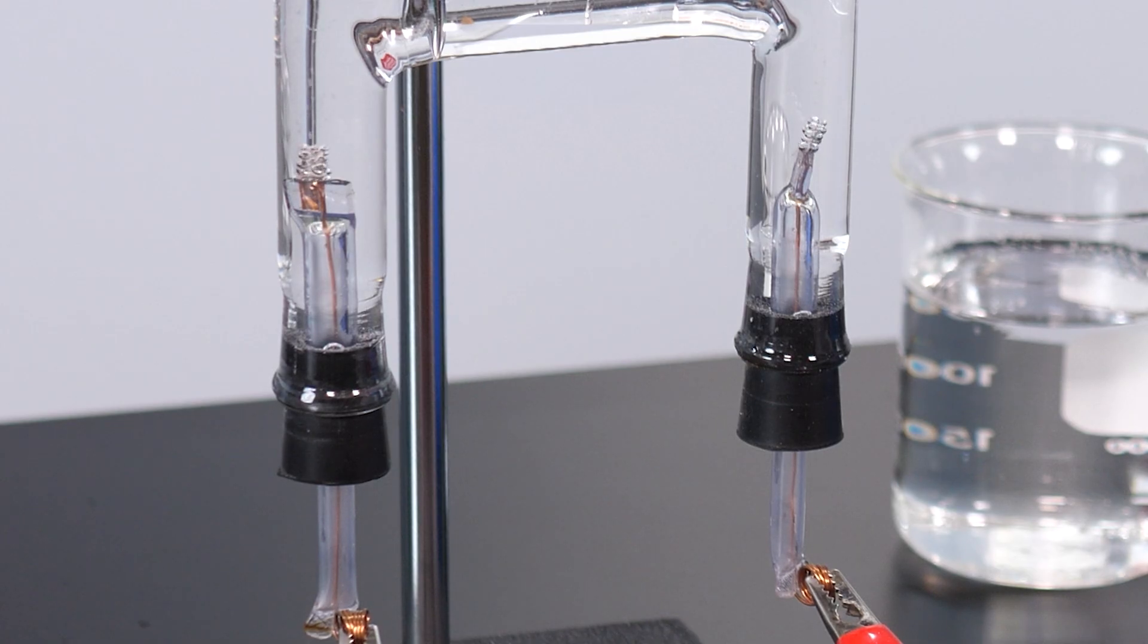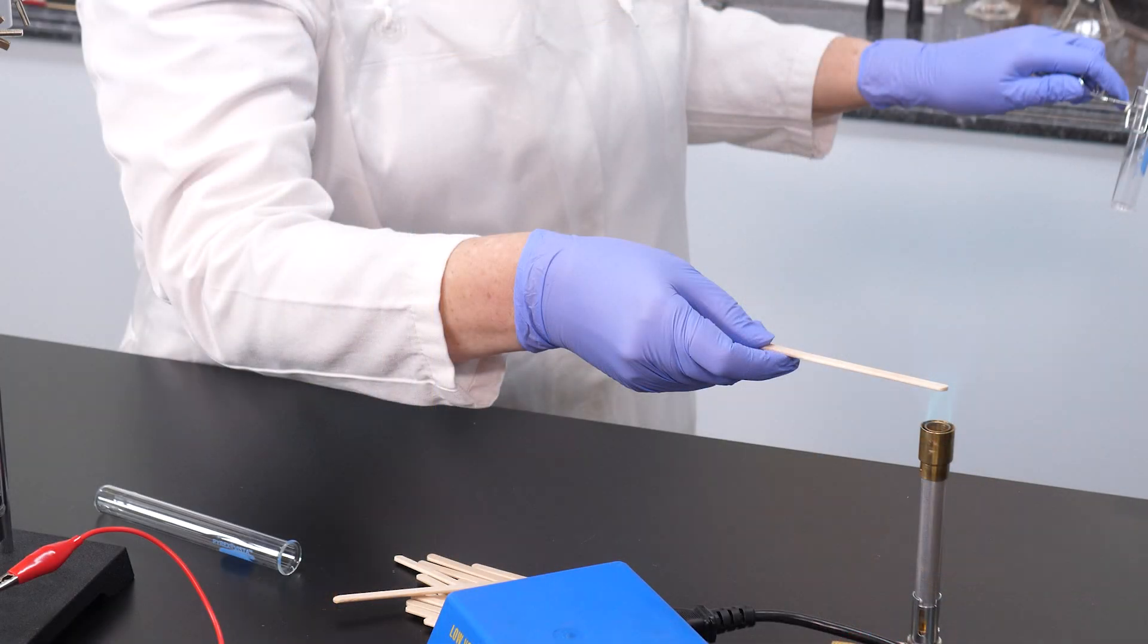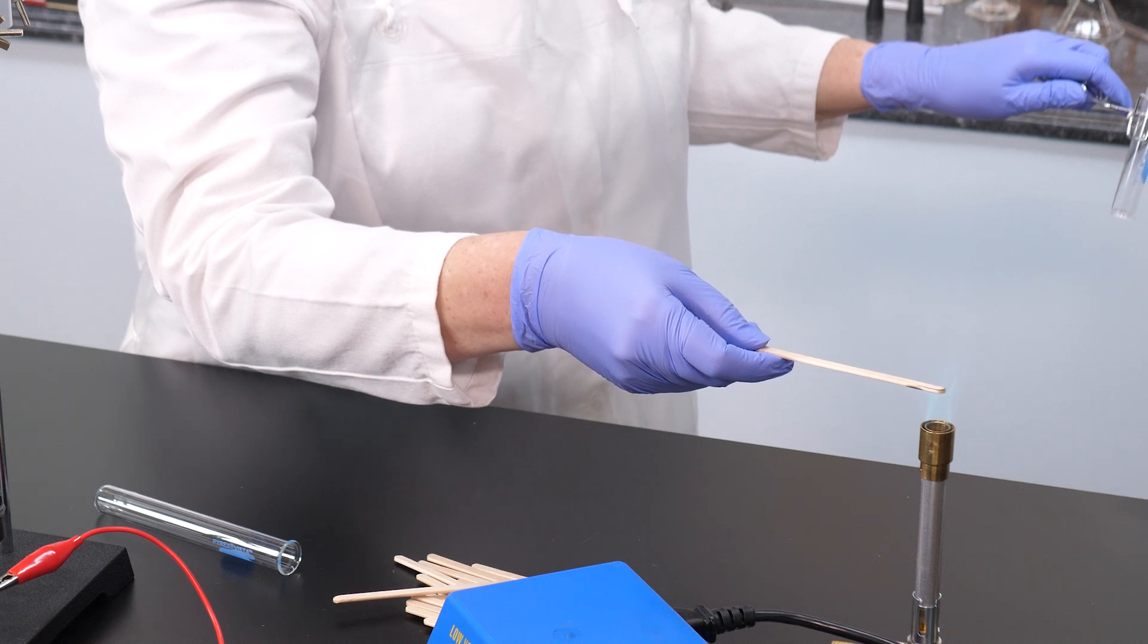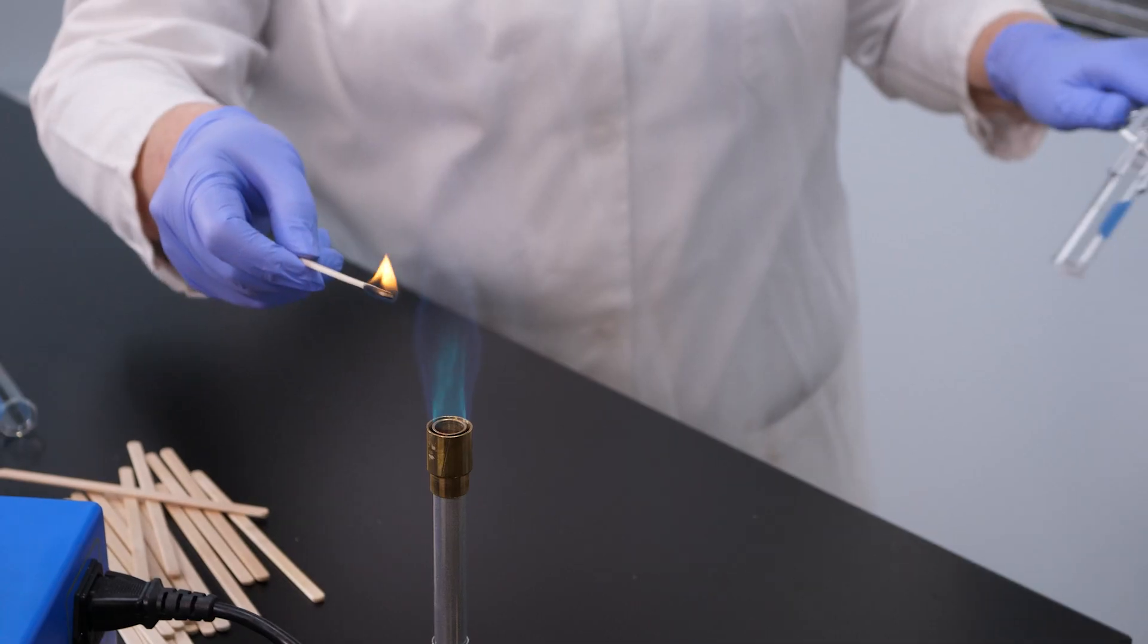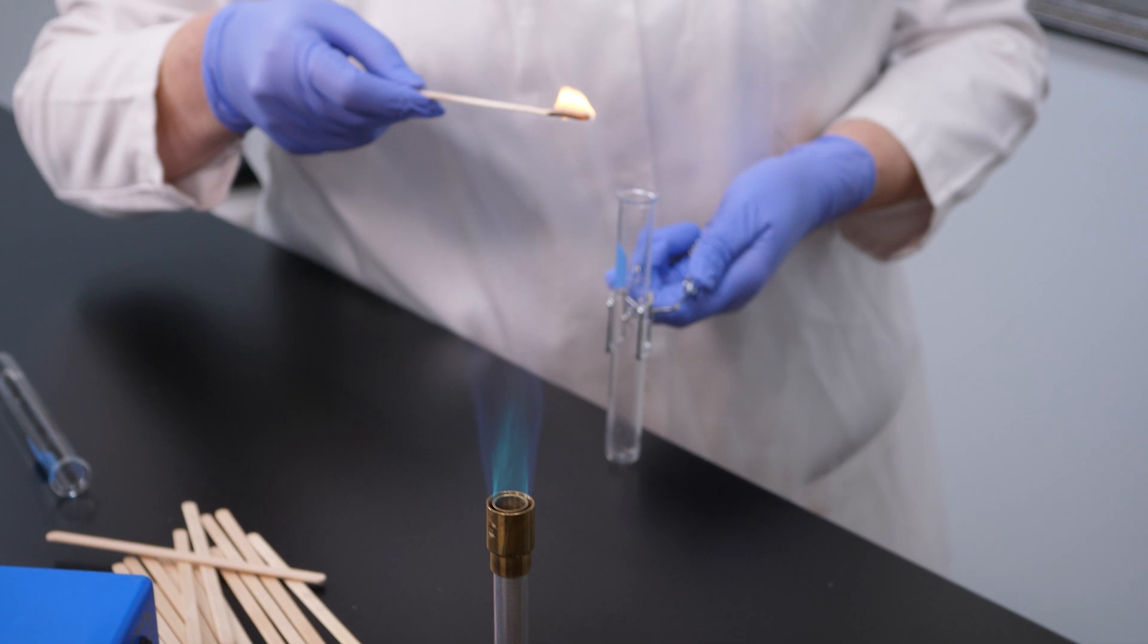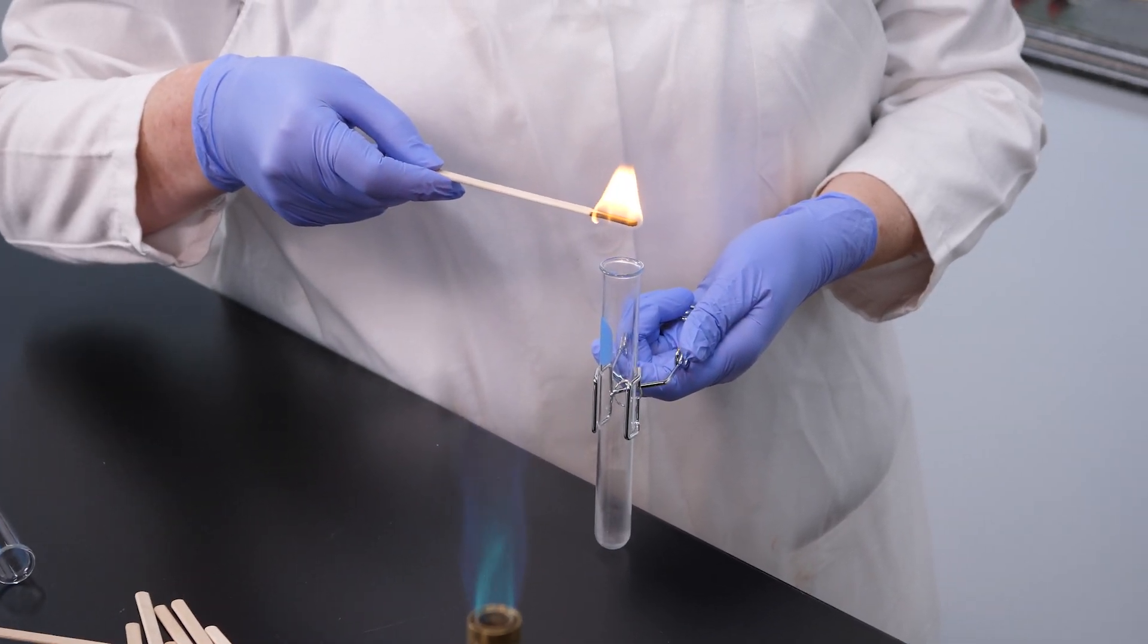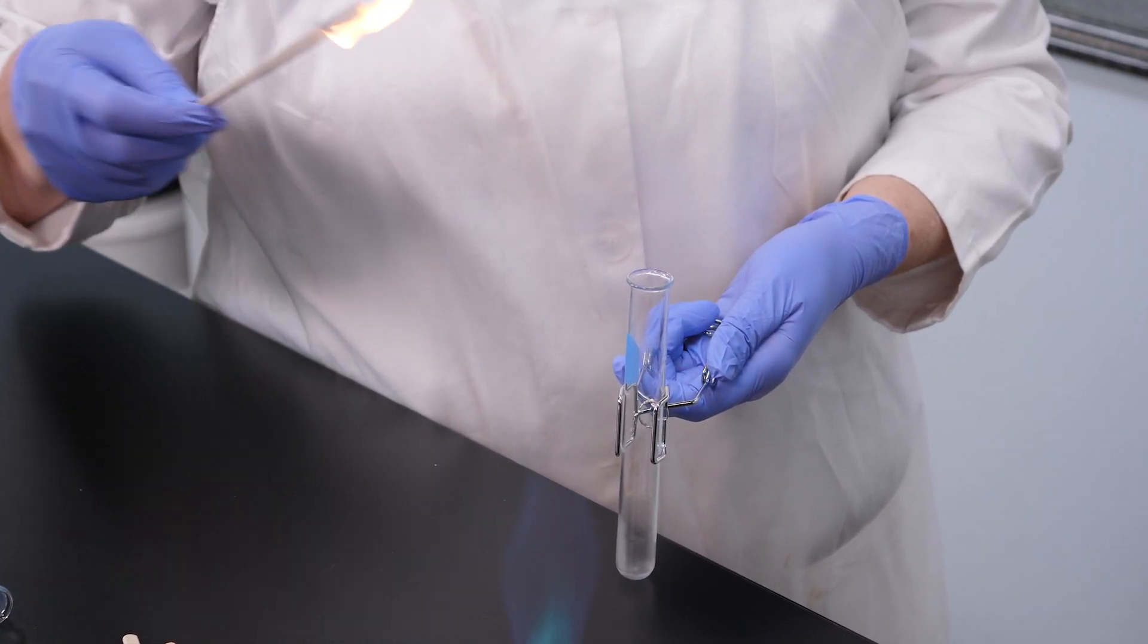Bubbles of hydrogen gas formed at the electrode in the left tube. Bubbles of oxygen gas formed at the electrode in the right tube. We used a wood splint to prove we collected hydrogen gas. When the flame from the wood splint came near the tube, the hydrogen gas ignited and produced a loud pop, proving we had hydrogen gas in the tube.